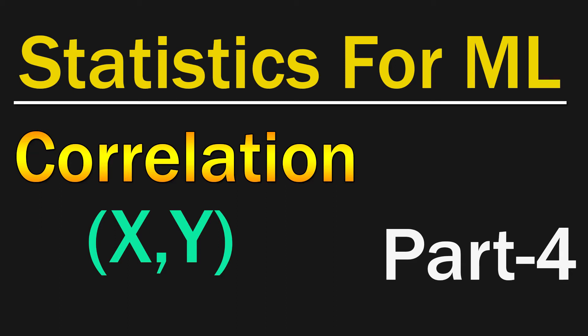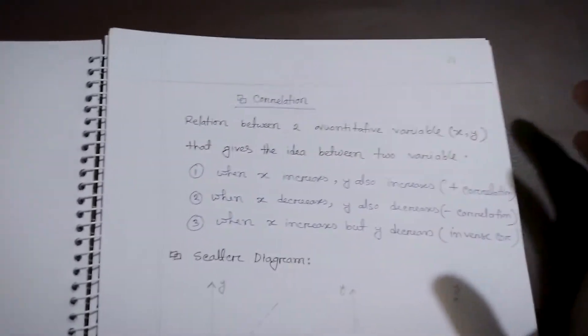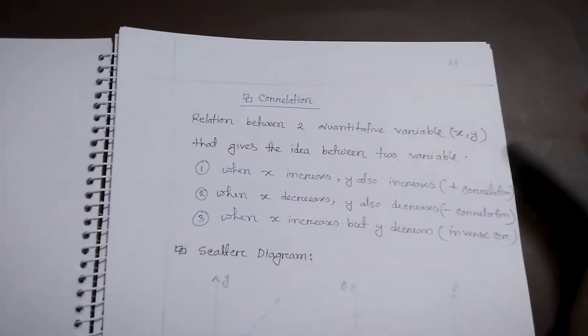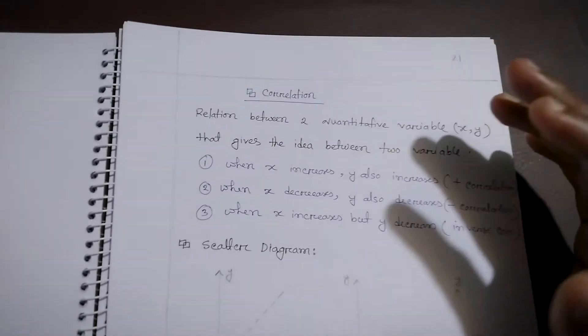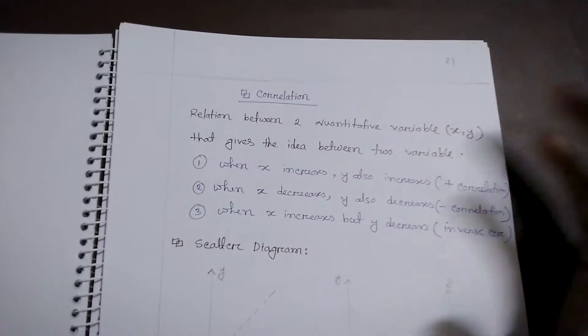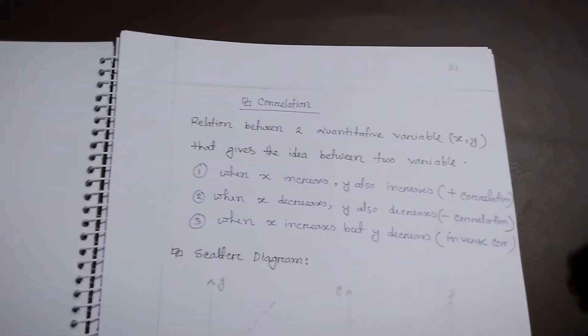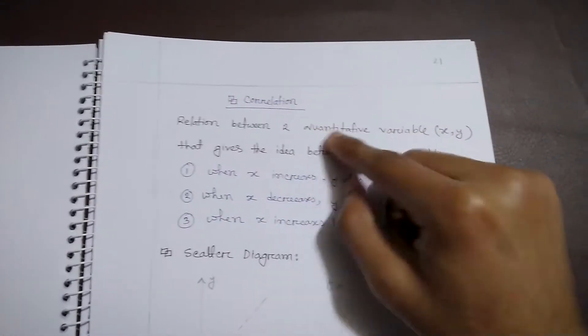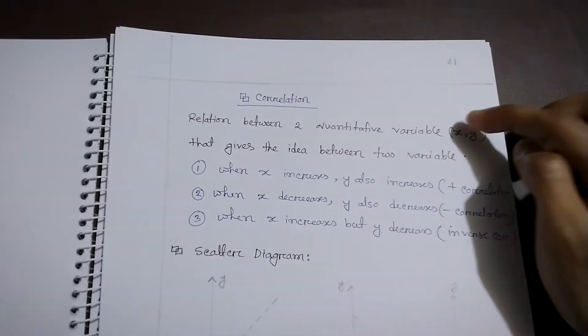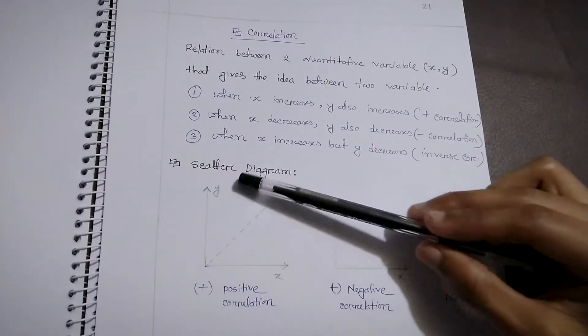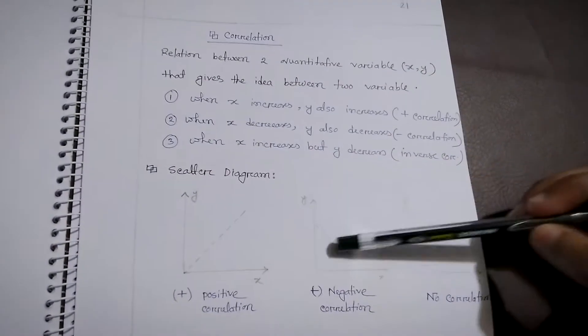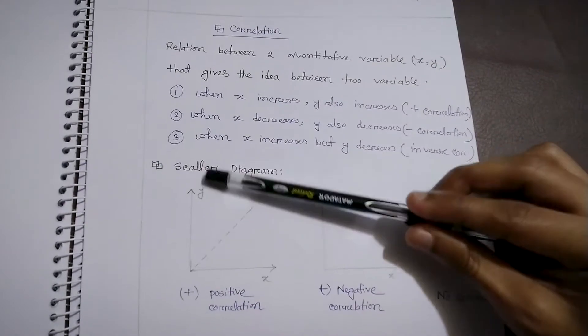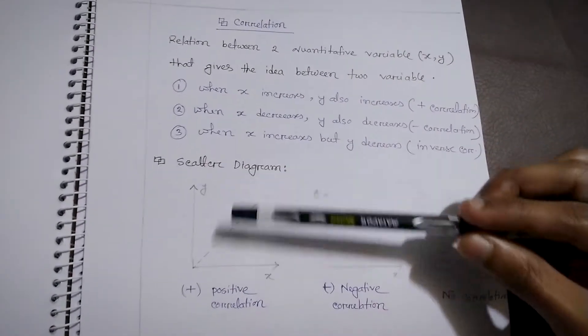Hello everyone. In this part we're going to talk about correlation. This topic is really important when you are understanding any graph based on x and y variables — it can be any variables x, y, z, and so on. It actually tells the relation between two quantitative variables, x and y. As you can see in the graph, we have three kinds of scatter diagrams.